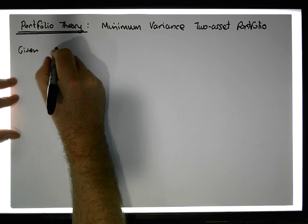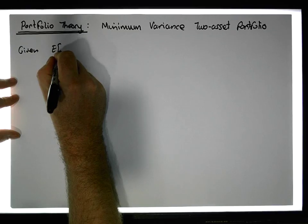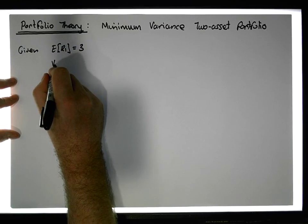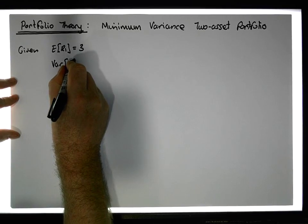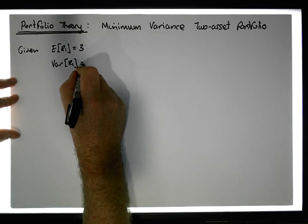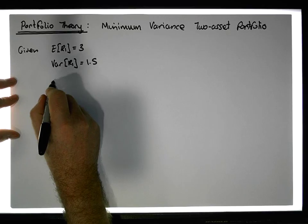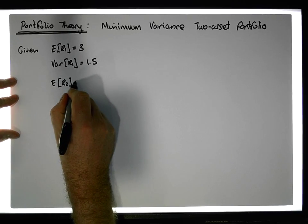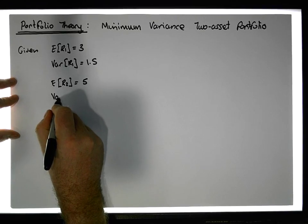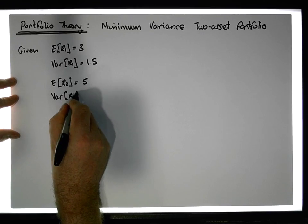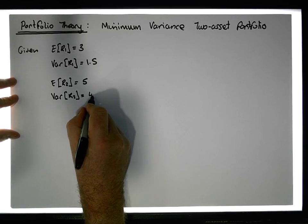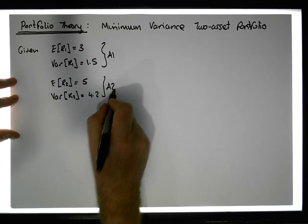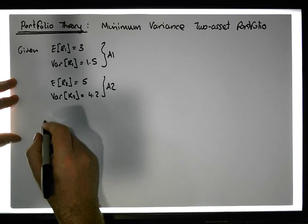Let's say we're given two assets where the expected return of asset one is equal to 3%, and the variance of the returns of asset one is equal to 1.5%. For asset two, the expected return is 5%, with a variance of returns equal to 4.2%. So these are the characteristics of A1 and A2.